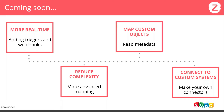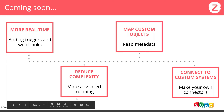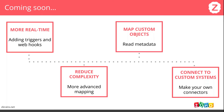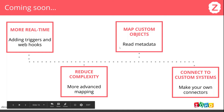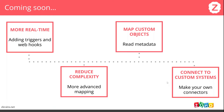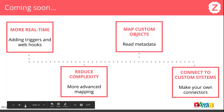Another feature people ask for is more advanced mapping — they want to do calculations, concatenate fields, parse data, things like that. That's more enterprise-grade and a ton of development, but it's on our roadmap. Also on the roadmap is mapping custom objects — we already have this for Zoho Creator, and we're working on it for Zoho CRM. Further out is the ability to connect to custom systems, meaning someone could make their own connectors by adding their own API to the platform without having to write code — done by a technical person, but not necessarily an engineer.